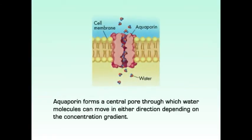Now let's look at aquaporins. Aquaporins are an important class of channels that does not take part in ion transport at all. Instead, these channels increase the rate at which water flows through membranes. In certain tissues like the kidney, water must be rapidly reabsorbed into the bloodstream after filtration. Similarly, in the secretion of saliva and tears, water must flow quickly through membranes. Aquaporins form a central pore through which water molecules can move in either direction depending on the concentration gradient.